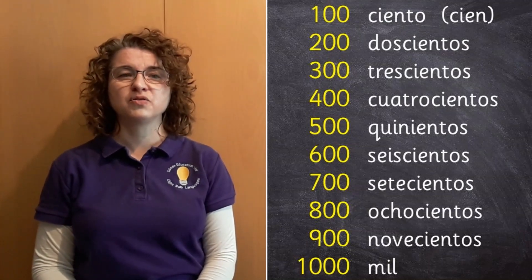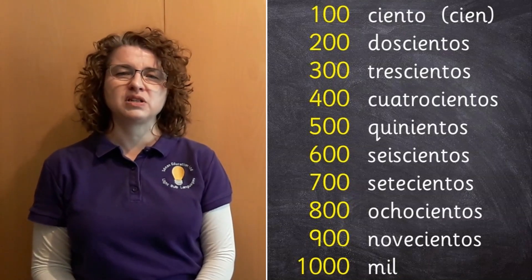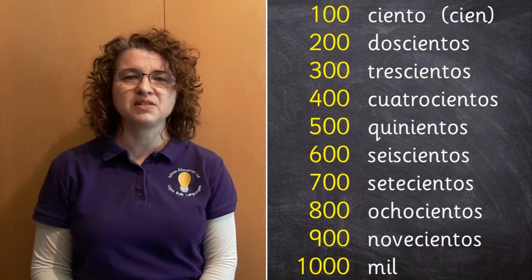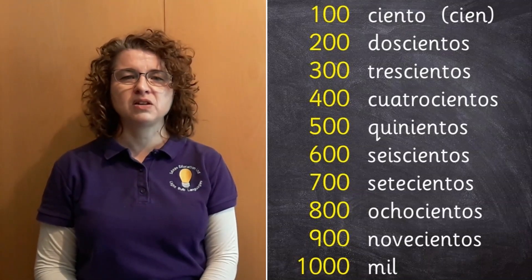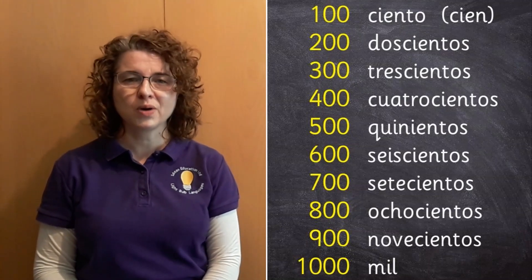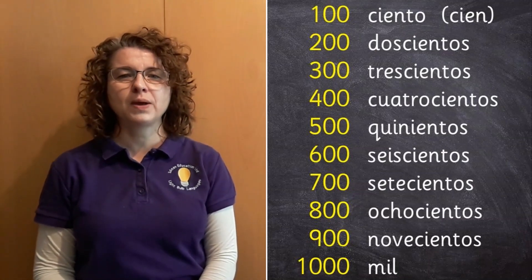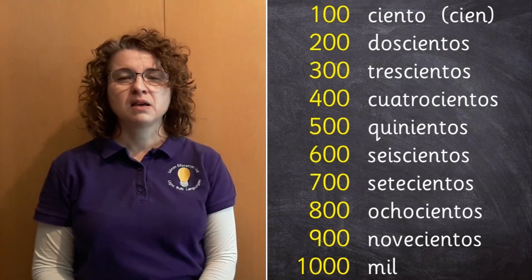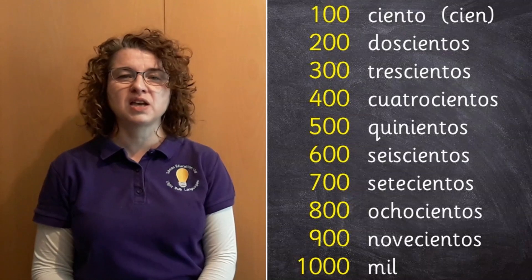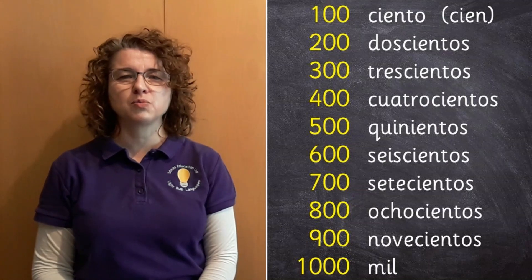So you can see the pattern of dos cientos occurs in most of these numbers, but there are some that have a slightly different pattern. So five hundred, for example, doesn't have the number cinco in it. We've seen dos cientos, tres cientos, cuatro cientos, but there's no cinco. However, it does have this quin at the beginning. It's a bit like quince for fifteen. And we do have some words in English that have quin at the front, which means five. See if you can think about what some of those words are.